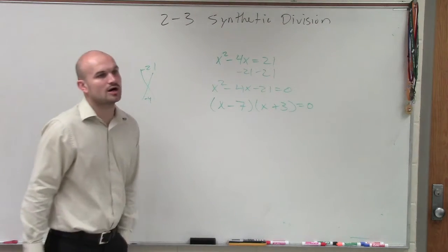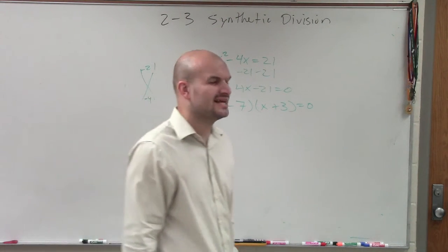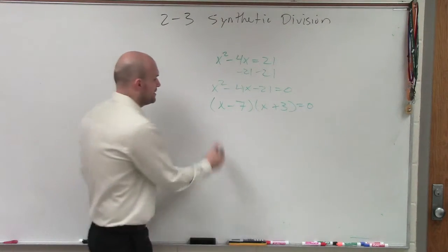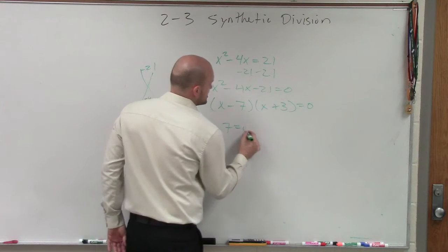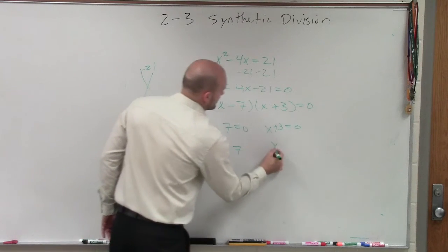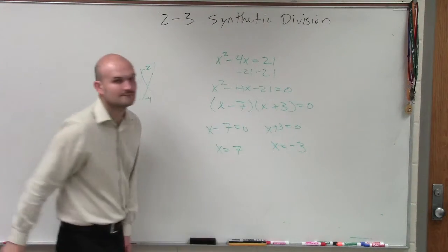Now if you are confused or you're like, was that it? You can always remember to check your answer by applying FOIL and multiplying this out. So now I have x minus 7 equals zero and x plus 3 equals zero. So therefore, x equals 7 and x equals negative 3.